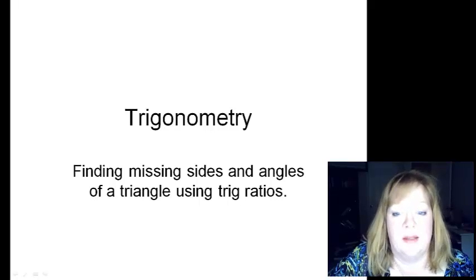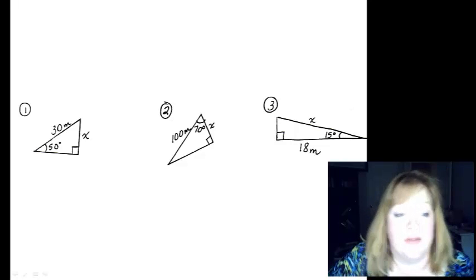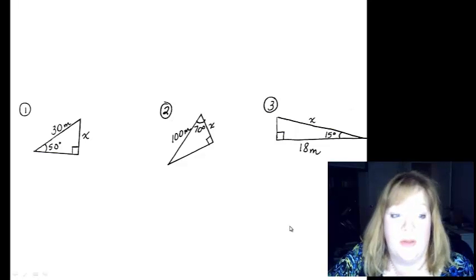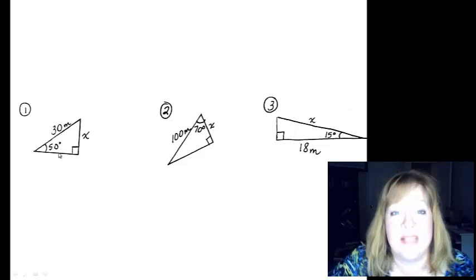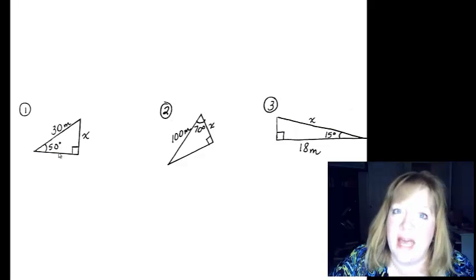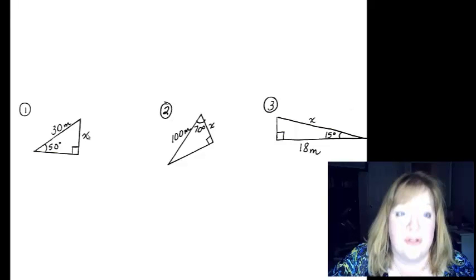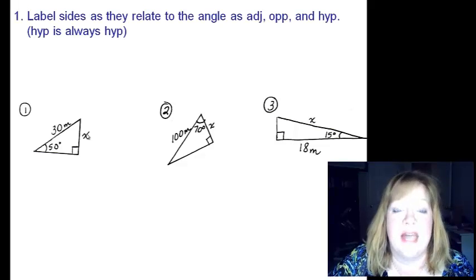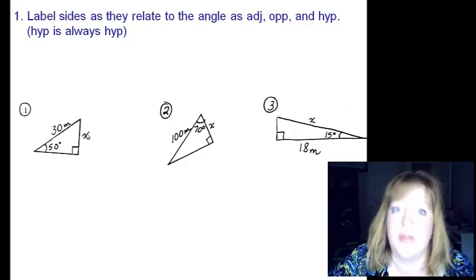Here we go. When you start out, you are given a triangle with one side and an angle. This is why I was emphasizing that you always put sine of theta equals this over this because it's a sine of an angle. The steps to solving for a side using your trig ratios is first off, label the sides as they relate to the angle, as adjacent, opposite, and of course hypotenuse is always hypotenuse.